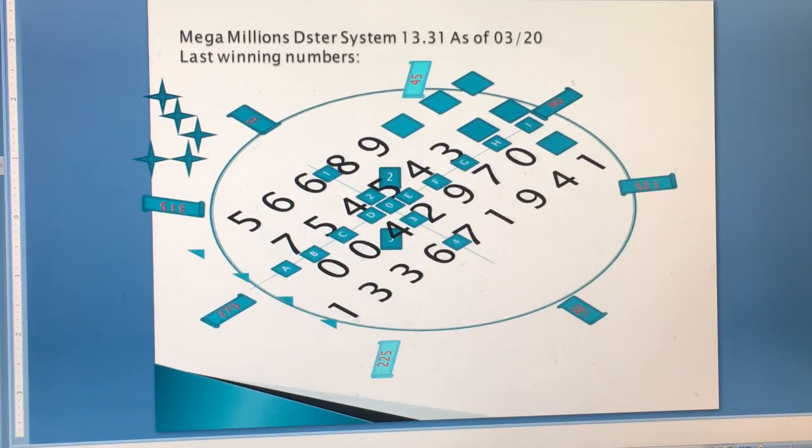5, 6, 6, 8, 9, 7, 5, 4, 5, 4, 3, 0, 0, 4, 2, 9, 7, 0, 1, 3, 3, 3, 6, 7, 1, 9, 4, 1. So this is the Dater System 13.31 which is randomized according to the Dater System 13.31. It's not set up - it's randomized.